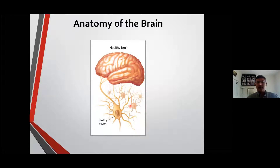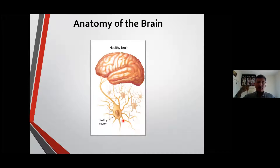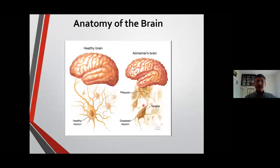Neurons are exactly like regular cells, but the special thing about neurons is they can actually talk to other cells really far away. One neuron in your leg is talking to your brain — that's how you know the pain is in your leg. But the problem with Alzheimer's disease is these plaques and tangles, which are bad proteins, start eating up neurons and actually make the head really smaller as they grow.